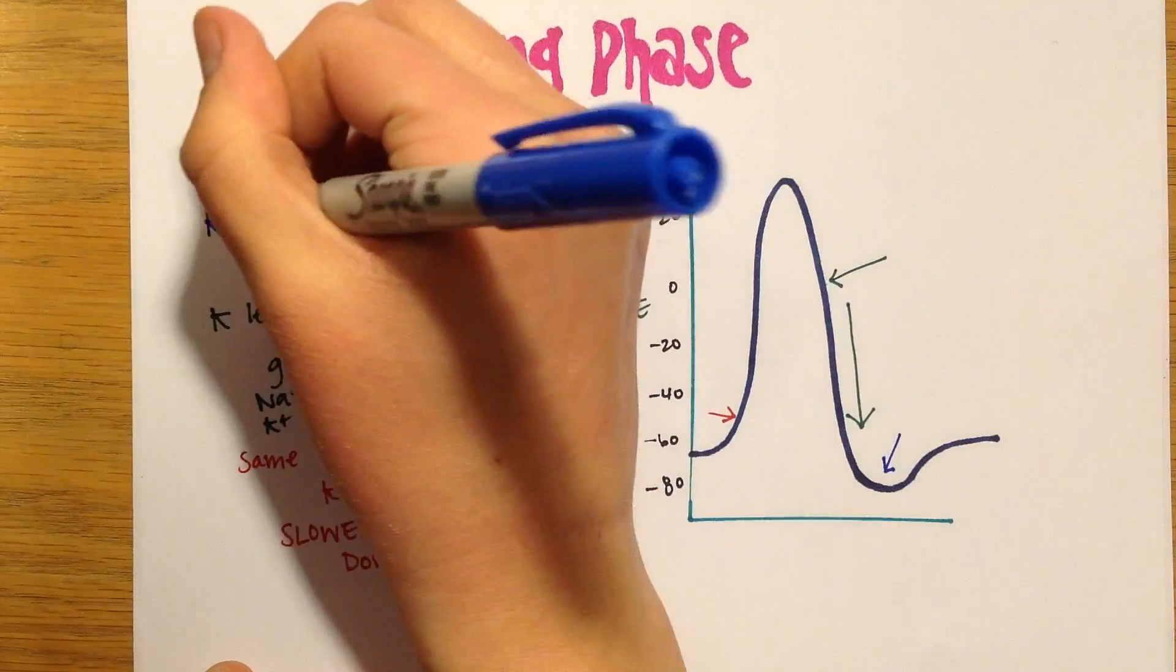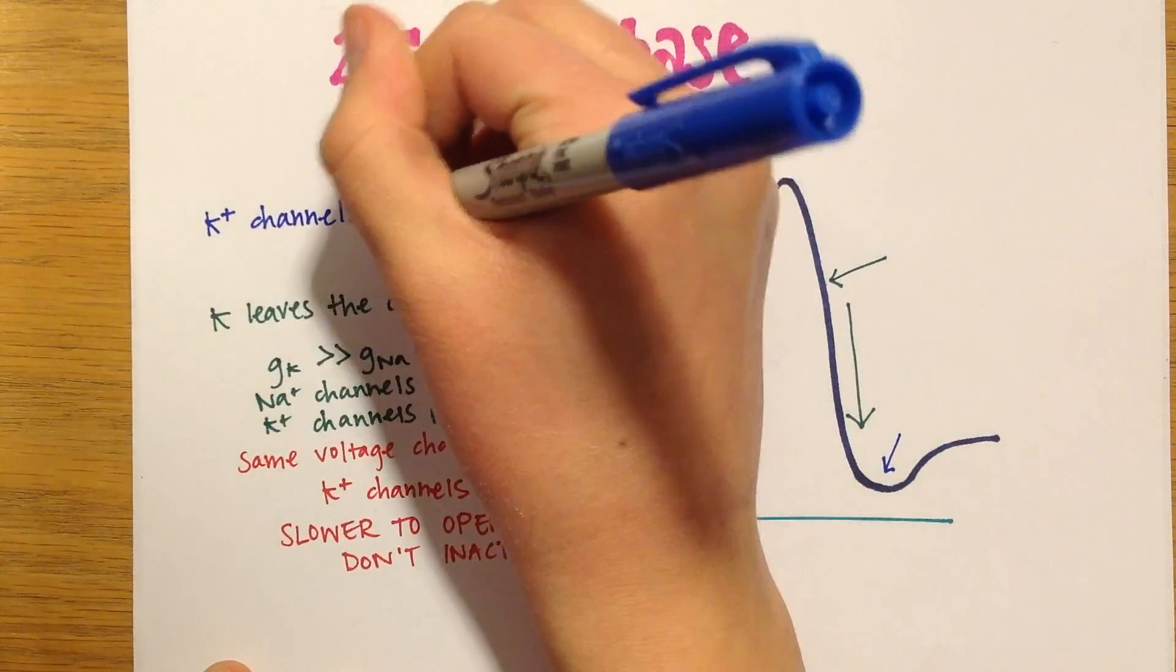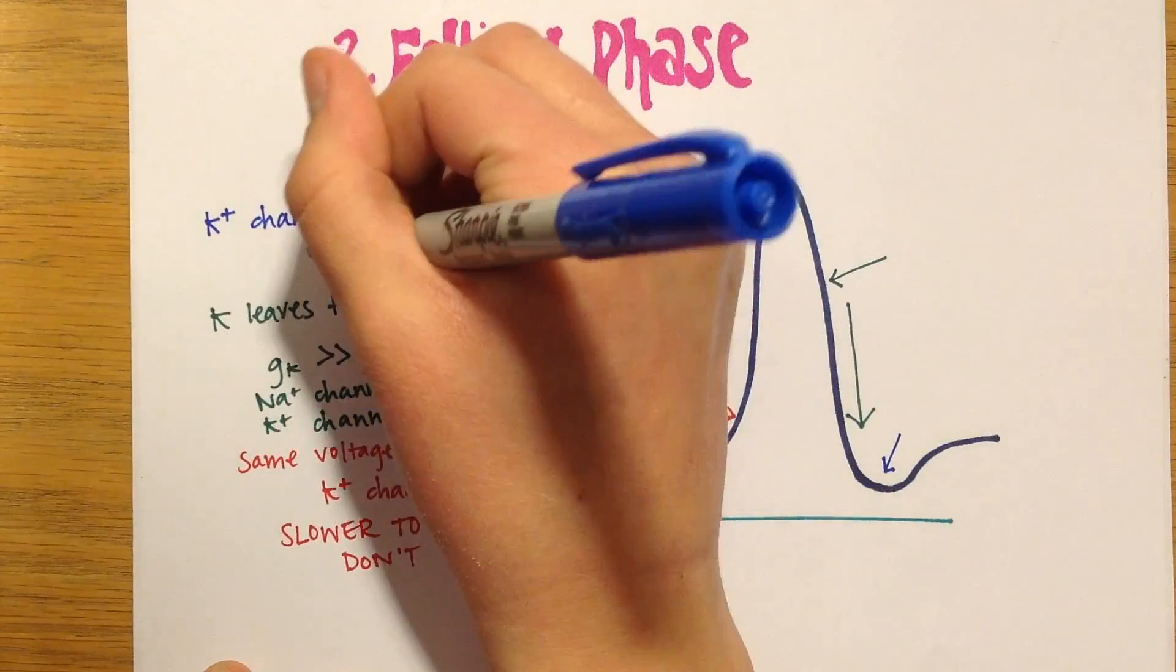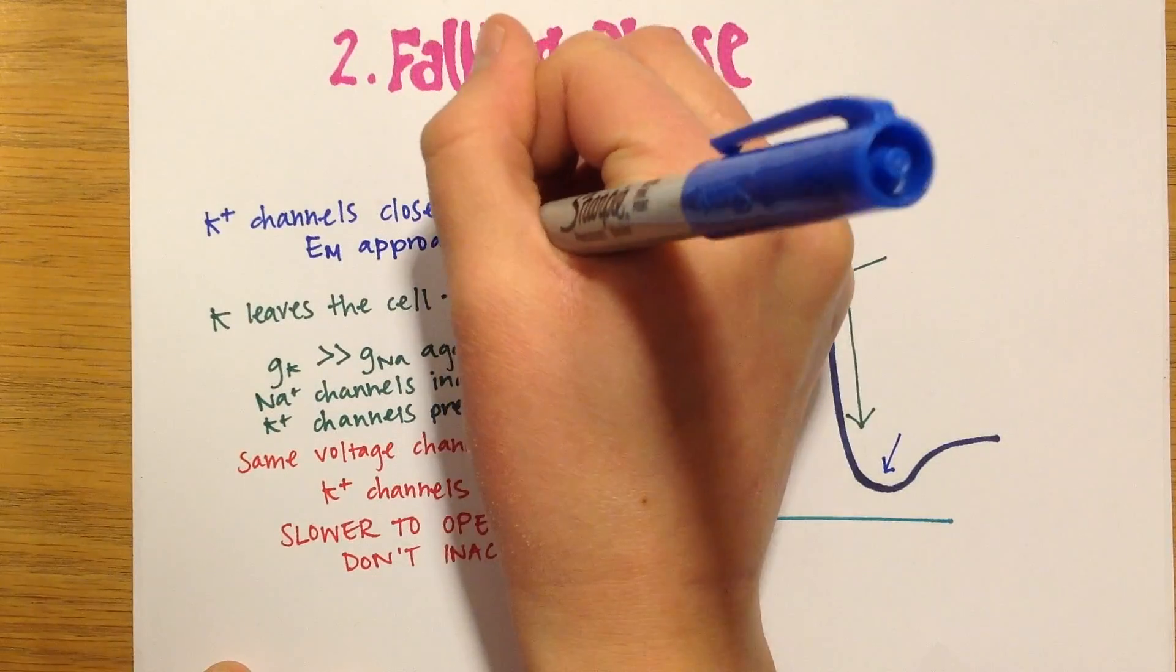Because potassium channels close slowly, the conductance of potassium is greater than at rest at this point, so the membrane potential undershoots the resting potential and approaches the equilibrium potential of potassium.